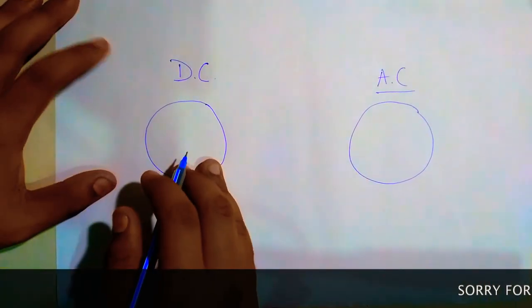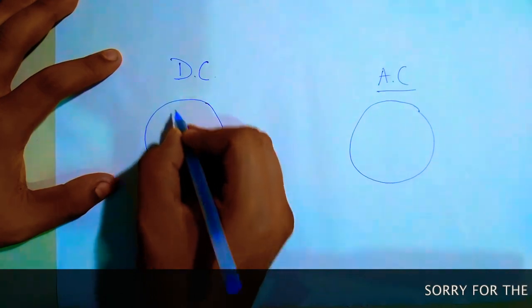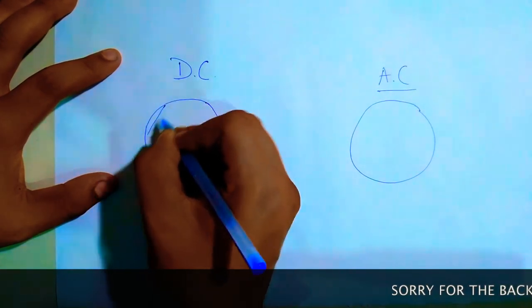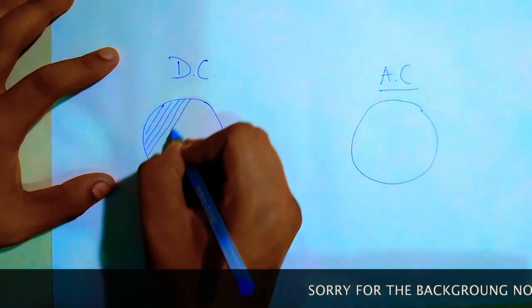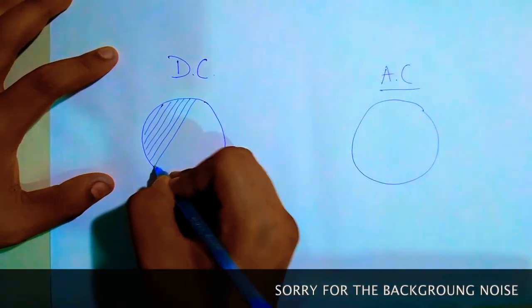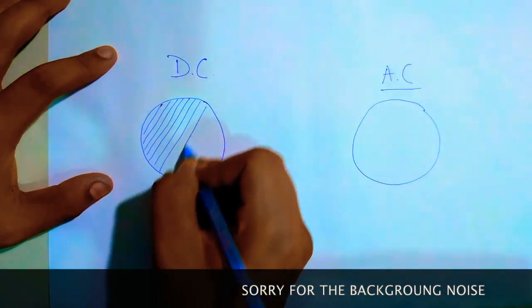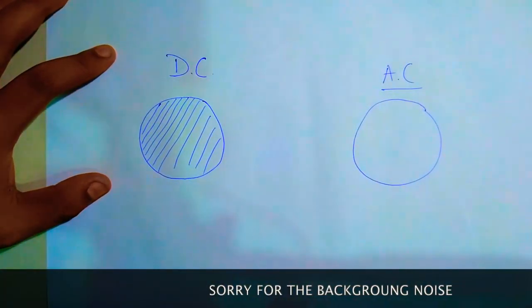In case of DC, the current flows through the entire cross-section of the wire which is pretty efficient since it uses the entire cross-section.